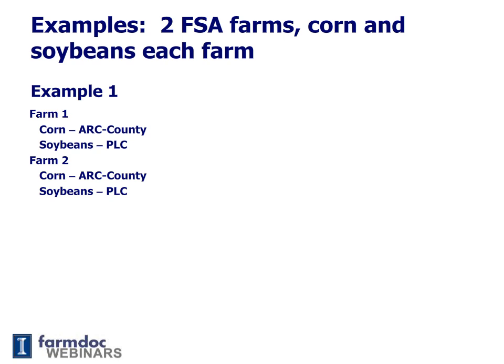I am going to do this for two farms and two crops, corn and soybeans. In example one, which you see now on the screen: on farm one and farm two, corn is enrolled in ARC County and soybeans are enrolled in PLC. This is one alternative.